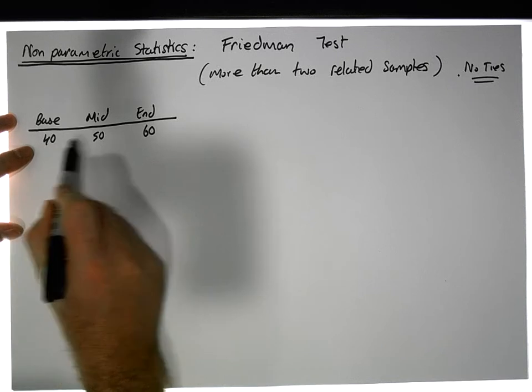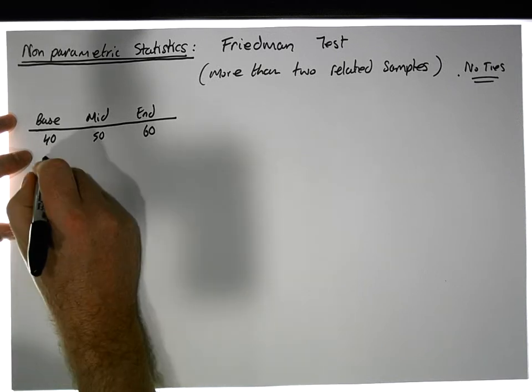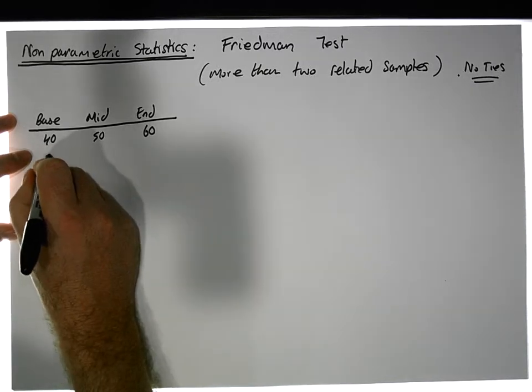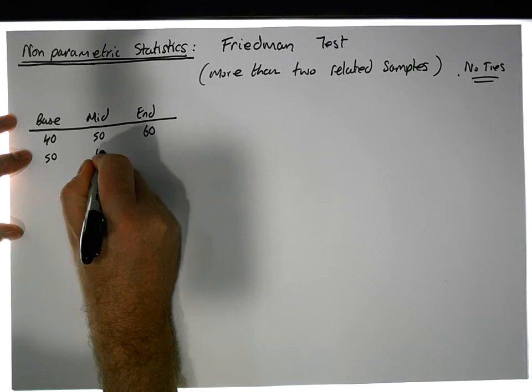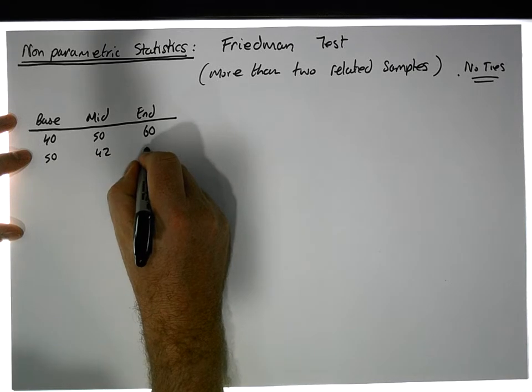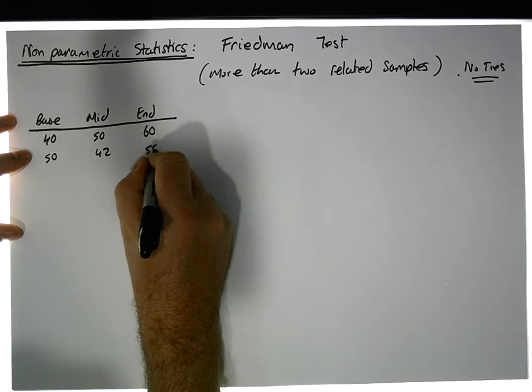So the first individual scored 40, 50, and 60. The next one scored 50, 42, 58.